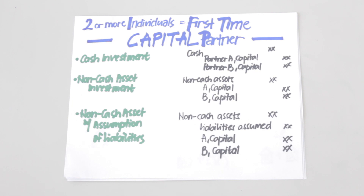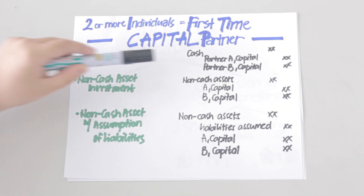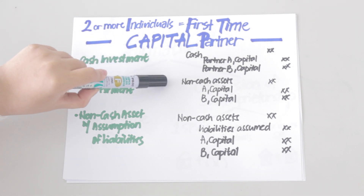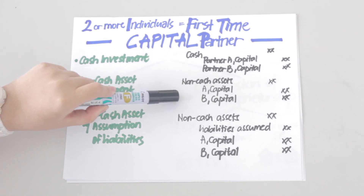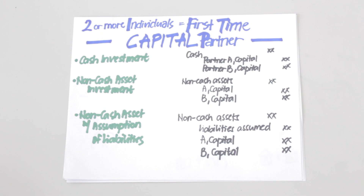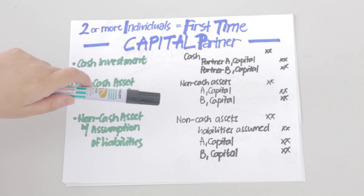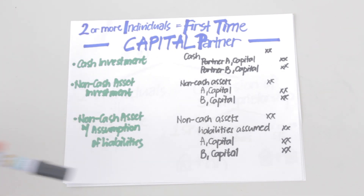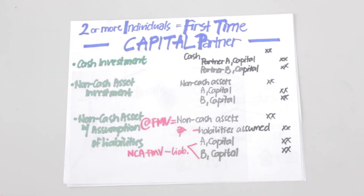For capital partners, money or other assets may be invested into the company. For a cash investment, debit cash and credit the partner's capital. For a non-cash asset investment, simply debit all the non-cash asset accounts and credit the partner's capital accounts. In certain cases, the partnership may assume the liabilities related to the non-cash asset invested, such as a mortgage for a building.